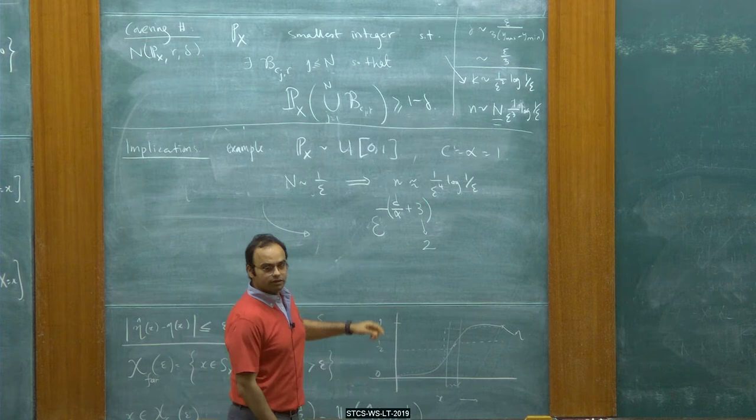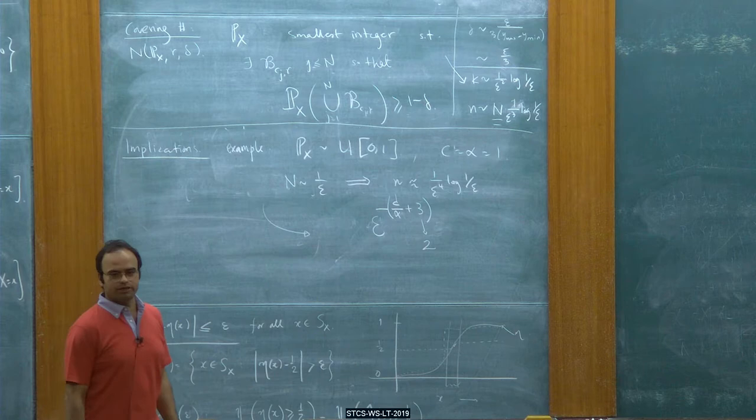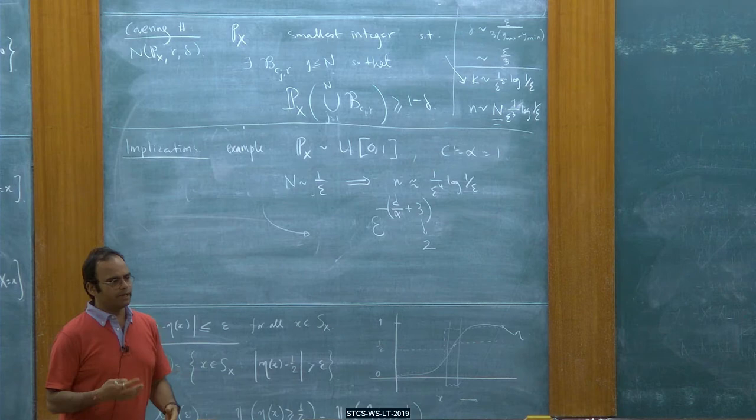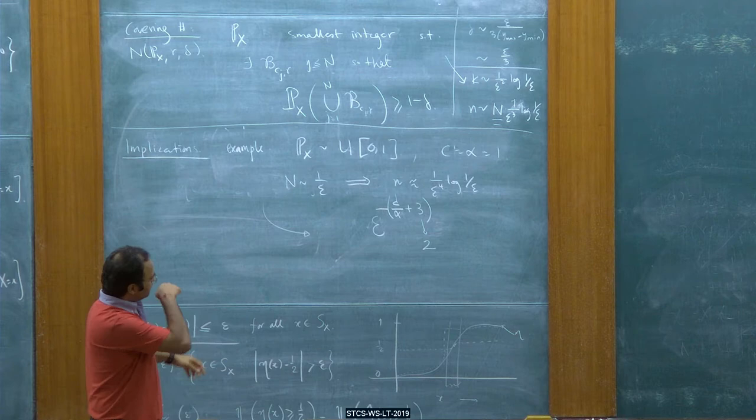The same argument you can repeat and apply in the context of reinforcement learning — using Q-learning with nearest neighbors — and again you lose plus 1 compared to the best parametric rate you can get. Again, that comes because of this type of generality of argument.